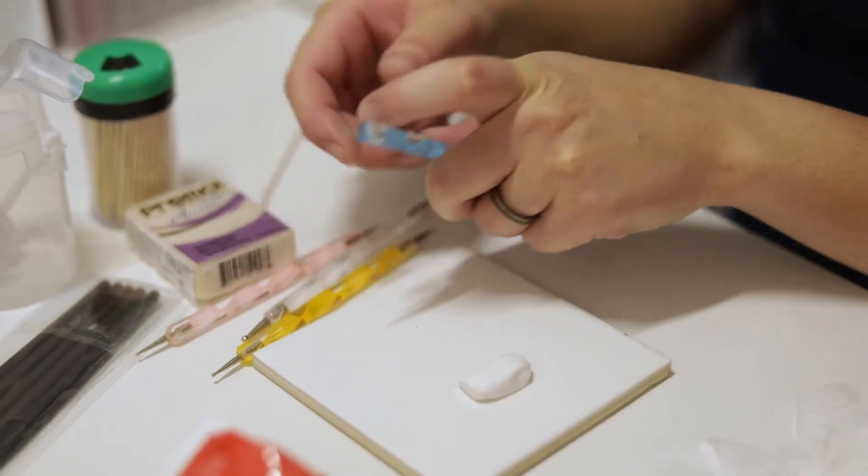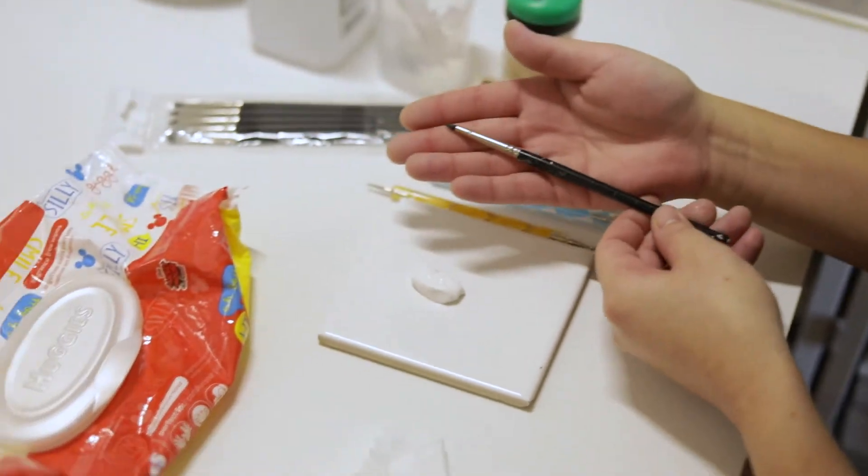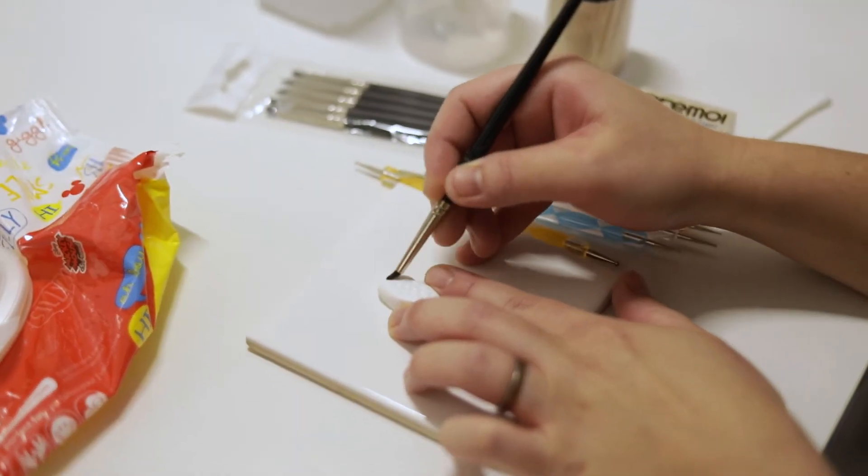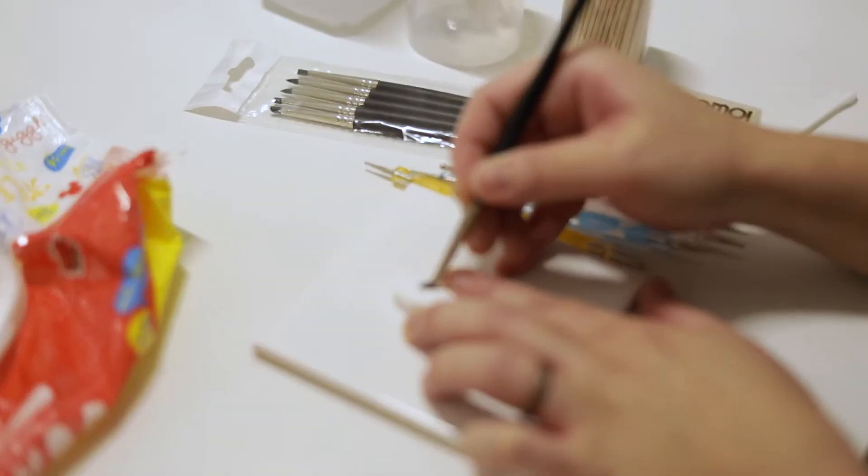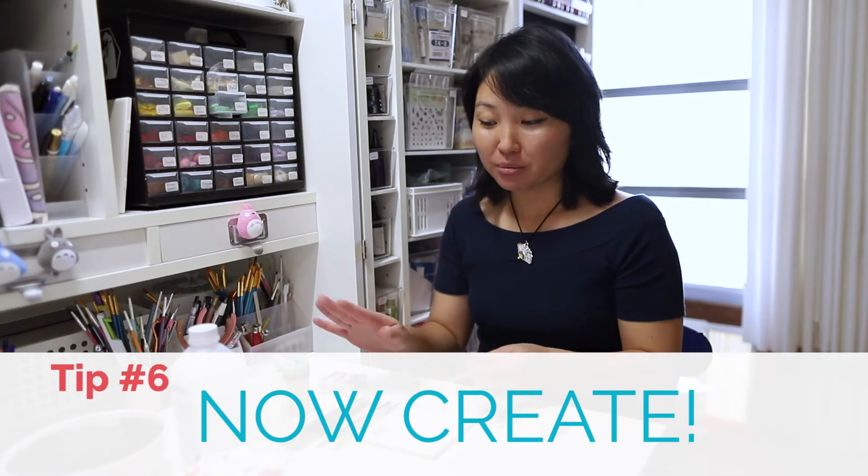Another thing I like to use is a silicone tool. You can get it in a little set. It's a little rubber tip and it's really good for smoothing out texture and blending pieces together.